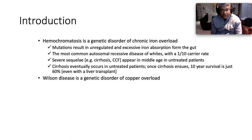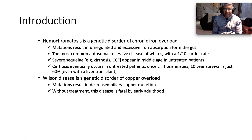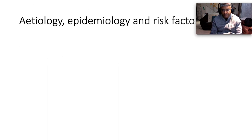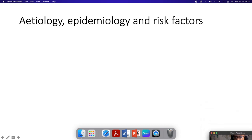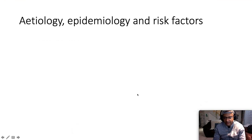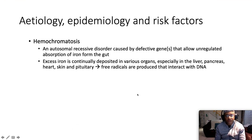Wilson disease is a genetic disorder of copper overload. Mutations result in decreased ability for copper excretion. Without treatment, this disease is fatal by early adulthood.